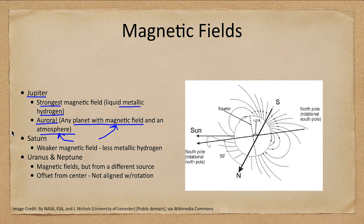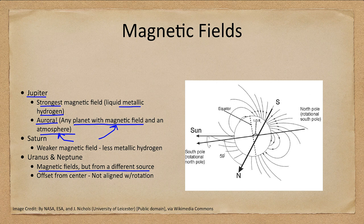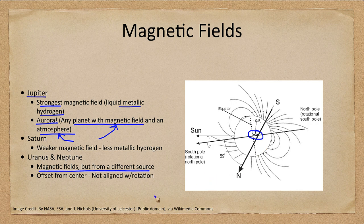Uranus and Neptune are a little bit different — they have magnetic fields, but they seem to come from a different source. They do not have the metallic hydrogen that the larger planets have. We also note that their magnetic fields are offset from the center. Most magnetic fields in the solar system are centered on the center of the planet, as though there is a giant magnet at the center, but with Uranus and Neptune they are offset by a significant amount — by about one-third of the radius.